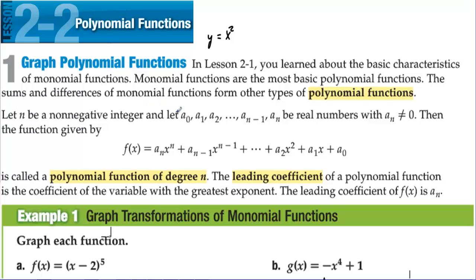Let n be a non-negative integer and let a₀, a₁, a₂, all the way to aₙ be real numbers with aₙ not equal to 0. Then the function given by this general form — with the leading coefficient and leading term, another coefficient, and so on down to a constant like plus 5 — is a polynomial of degree n, for example degree 3. The leading coefficient of a polynomial function is the coefficient of the variable with the greatest exponent, which is aₙ.